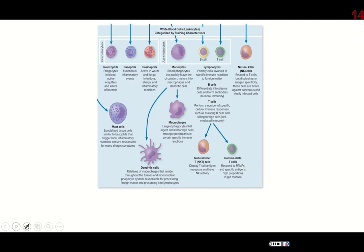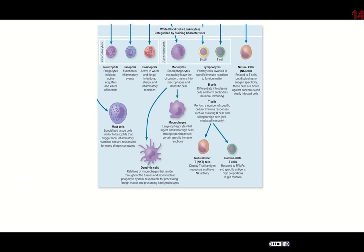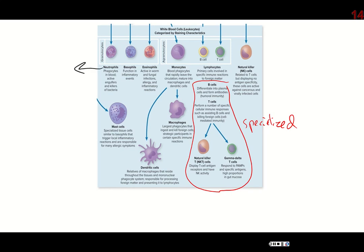Here's a picture from your textbook listing a whole bunch of different white blood cells. White blood cells have different jobs. Your B and T cells are your specialized cells — everybody else is non-specialized. You should know a little bit about the differences between them. Neutrophils are the most common white blood cell circulating in your blood, and they're usually the first responders.